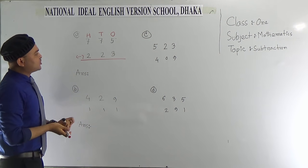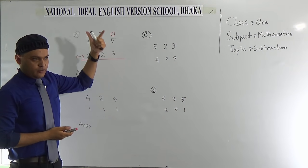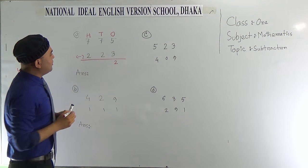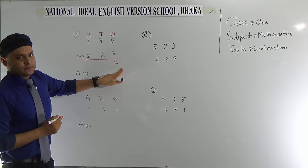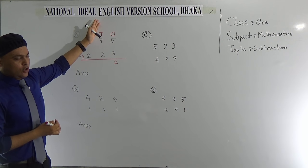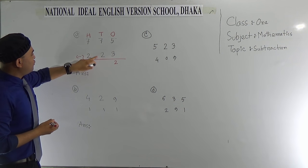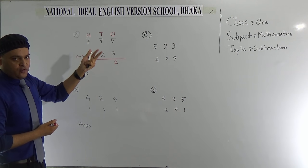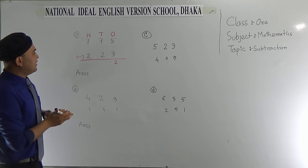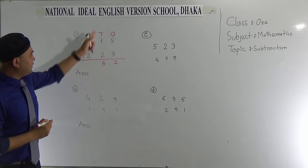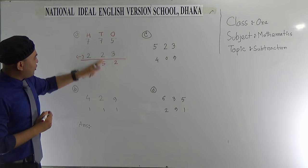Now subtract 3 from 5. 3 to 5, that is 2, and this 2 we will put in the 1's place. Then we move to the 10's column. Subtract 2 from 7. 2 to 7 is 5, and the 5 will go in the 10's column answer.